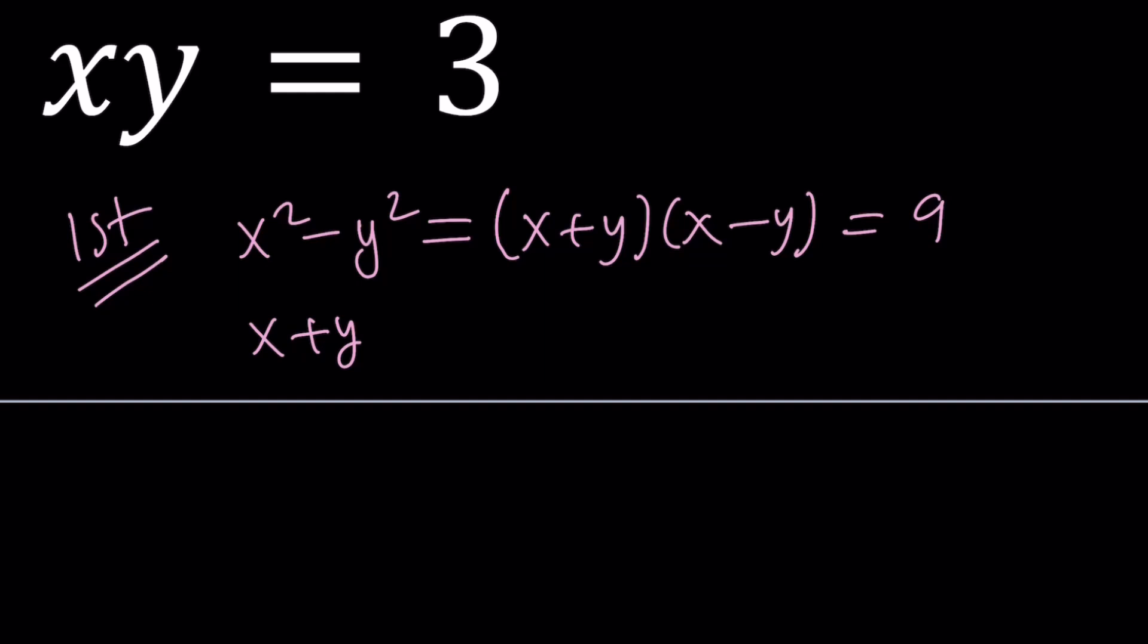And I'm hoping that you know this identity. If you subtract x plus y squared and x minus y squared, you get 4xy. Because 2xy and 2xy added together and everything else cancels out. So, I try to use this because I do know that xy is equal to 3. So, this becomes 12.